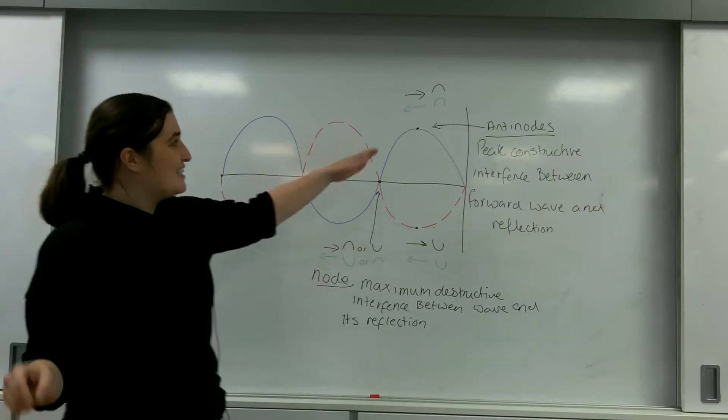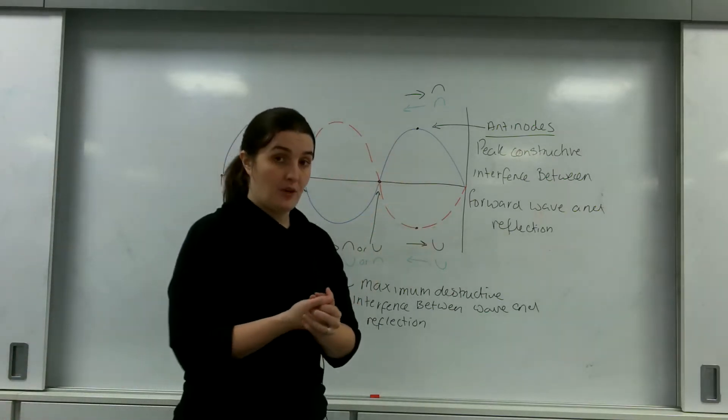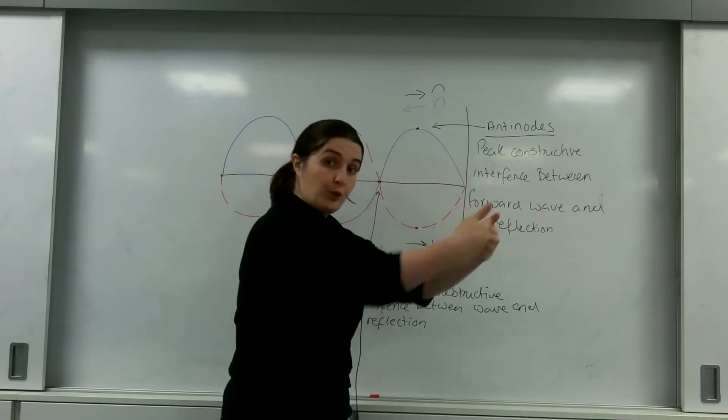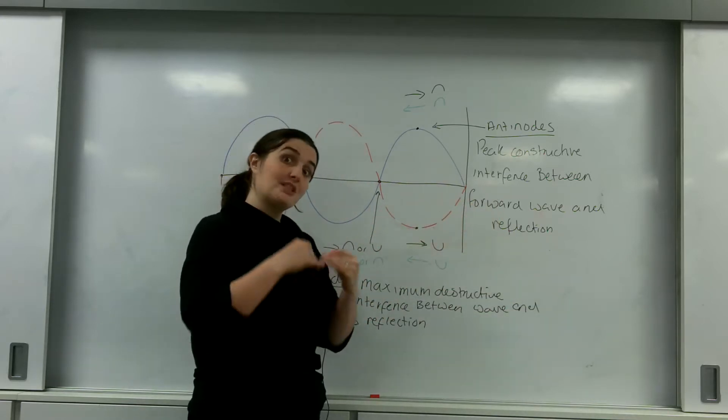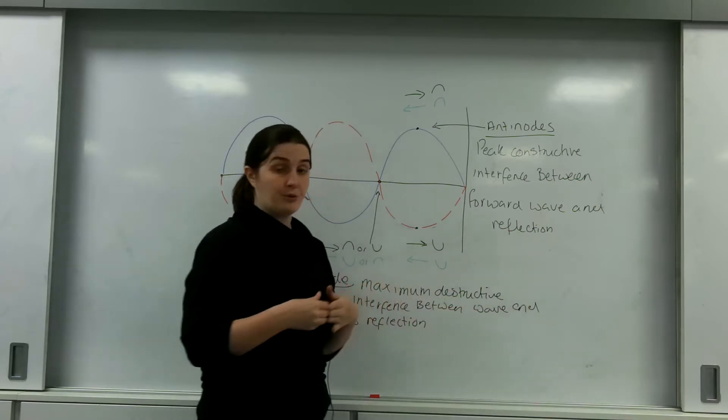So at this antinode, you have peak constructive interference between the forward wave and its reflection. And at the node, you have maximum destructive interference between the wave and its reflection.